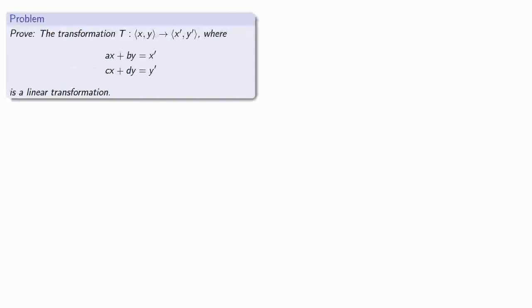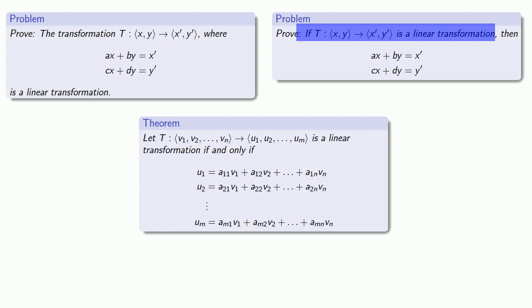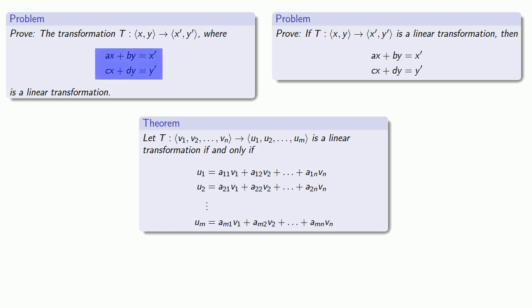Now if we put these two proofs together, we've proven that any transformation of this form is a linear transformation, and also that any linear transformation must be of this form. And while we only did the proof for vectors with two components, it's easy enough to generalize this to vectors with n components. These two results together give us our general theorem: if we have a linear transformation, we can express it as a set of formulas, and likewise, any transformation we can express as a set of linear formulas is going to be a linear transformation. And we call that result a theorem.